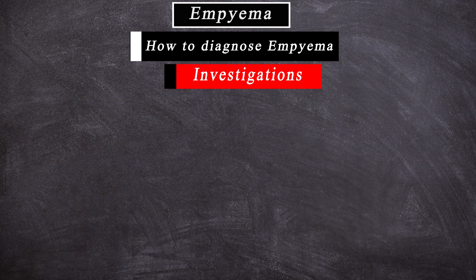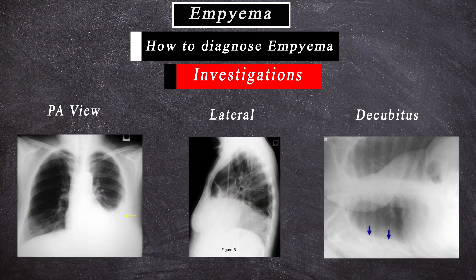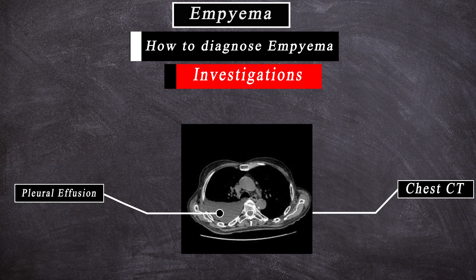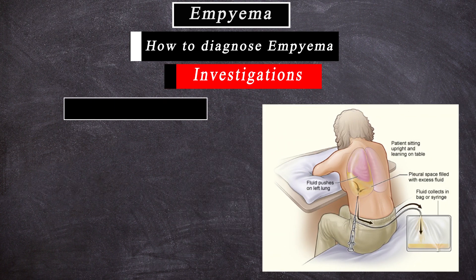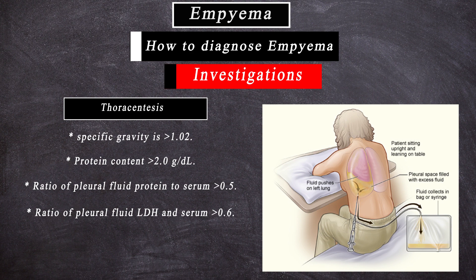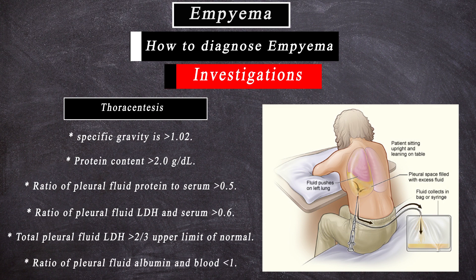On investigation: chest X-ray, PA and lateral, and/or decubitus film to determine loculation. Chest CT provides anatomy and helps planning for chest tube placement or surgery, as well as showing thickened pleural peel and presence of calcifications, which help determine if thoracotomy rather than VATS is necessary. Thoracocentesis with Gram stain and culture — Light's criteria distinguishes transudative from exudative effusion. Exudative if specific gravity is more than 1.02, protein content more than 2 g/dL, and at least one of: ratio of pleural fluid protein to serum more than 0.5, ratio of pleural fluid LDH to serum more than 0.6, total pleural fluid LDH more than two-thirds the upper limit of normal, or ratio of pleural fluid albumin to blood less than 1.